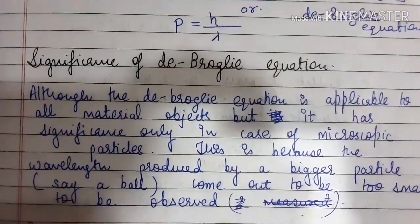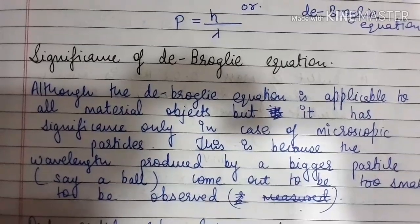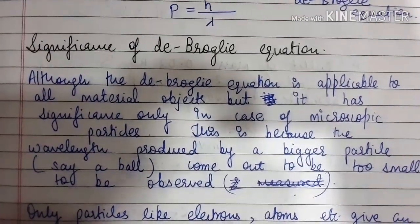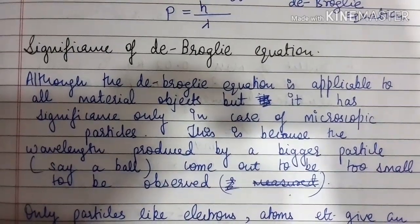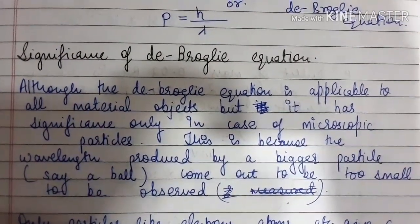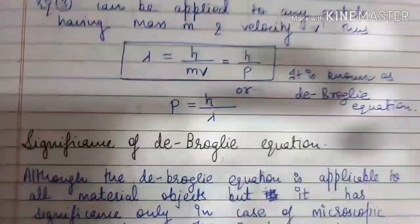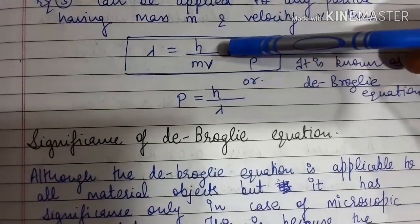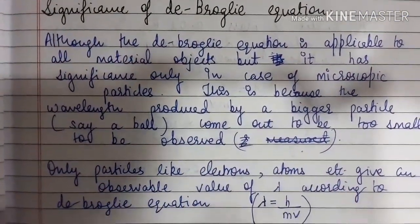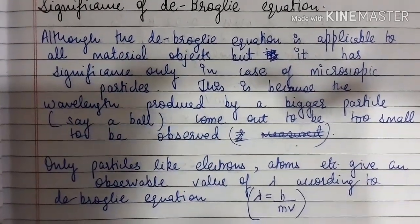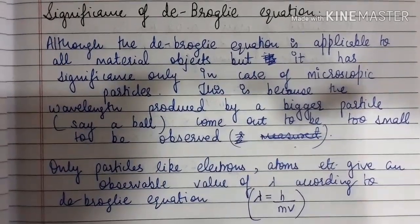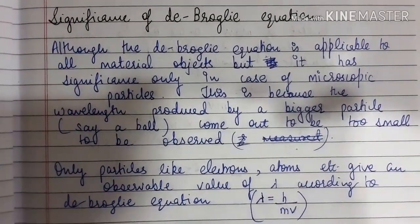Although the de Broglie equation is applicable to all material objects, it has a significant role in the case of microscopic particles. This is because the wavelength produced by a bigger particle is too small to be observed. Since wavelength and mass are inversely proportional — as we conclude from the equation, λ is inversely proportional to m — only particles like electrons and atoms give an observable value of lambda. So its significance is only in the case of microscopic particles.